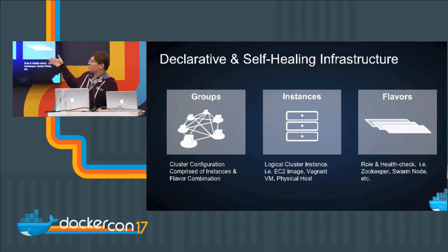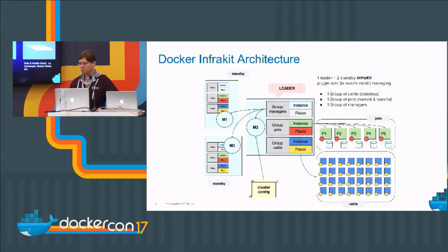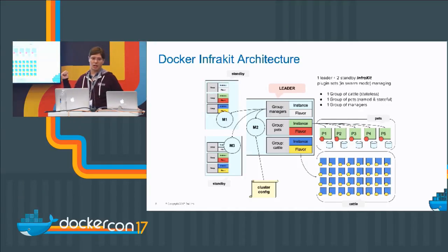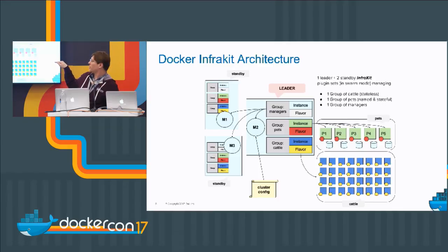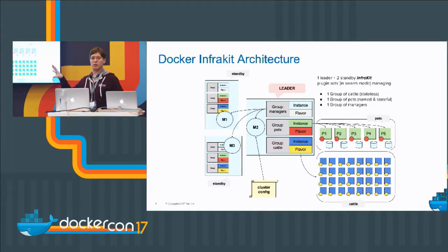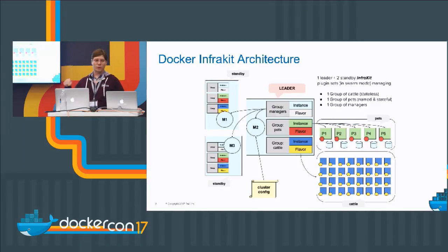Each of these plugins is, in effect, just a Go process that runs and registers itself. InfraKit discovers them through Unix sockets. The architecture — designed so you create the group and register your instance plugins and flavor plugins with InfraKit. After you've done that, you design a group that deploys a certain number of instances of those various flavors. You can deploy highly available InfraKit with standby InfraKit instances, deploying all plugins together as one unit that can cooperate on the same OS.